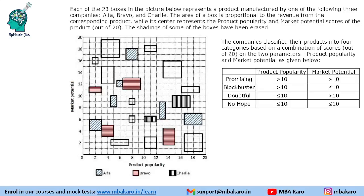Hello everyone, welcome to Aptitude Jab. This set from CAT 2018 Slot 2 DILR is a sort of a bubble chart, except that instead of circular bubbles you have rectangular bubbles. The concept is that you read one value along the x-axis, another value along the y-axis, and find the area of these rectangles — technically the concept of a bubble chart but with rectangles.